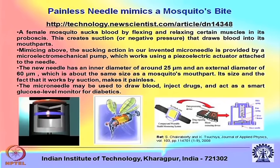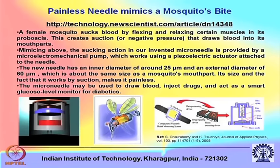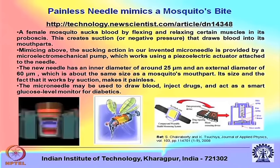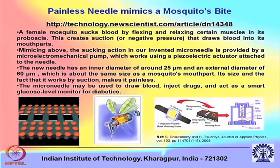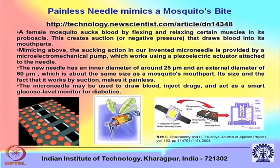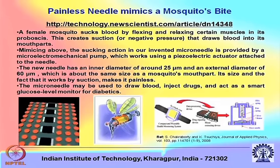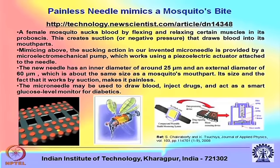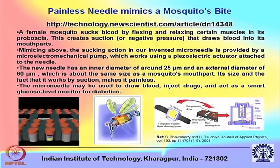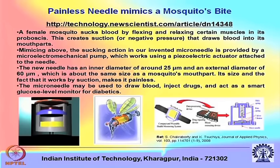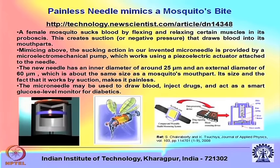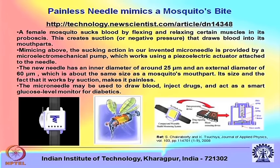This is called biomimetics. It does not mean that we just copy what is there in nature — it is impossible to copy exactly — but we can get some lessons out of it. For example, when a mosquito sucks blood it typically creates a suction pressure or negative pressure that draws blood into its mouth parts. Mimicking this sucking action in a micro-needle may be provided by a micro-electromechanical pump, which can draw a very small volume of blood.